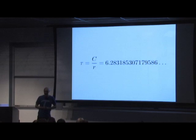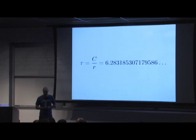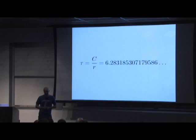We've seen in this talk that the natural circle constant is the ratio of a circle's circumference not to its diameter but to its radius, which I hope you'll join me in calling tau. And I'd like to end today with some words that have come to have deep personal meaning for me: 6.283185307179586476925286766559005768394338798750211.